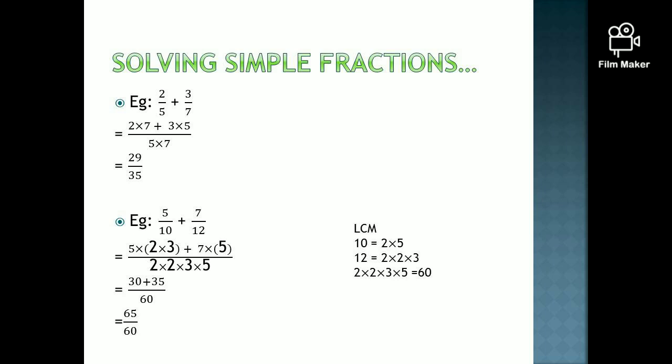60 is 2 into 2 into 3 into 5. When you write the denominator in the next step, write that expansion version of the LCM for 10 and 12. That would be easier for you to understand. The denominator in the next step is 2 into 2 into 3 into 5.